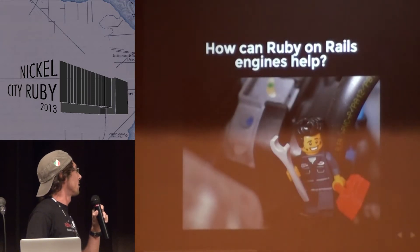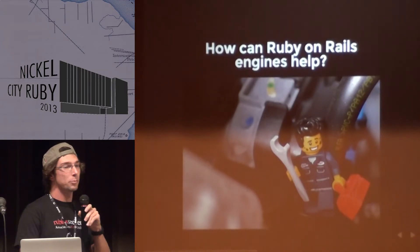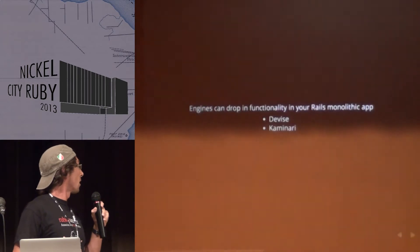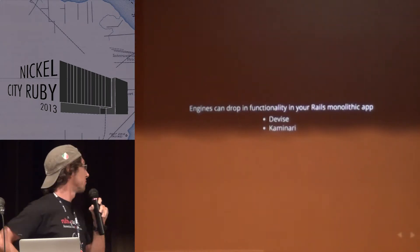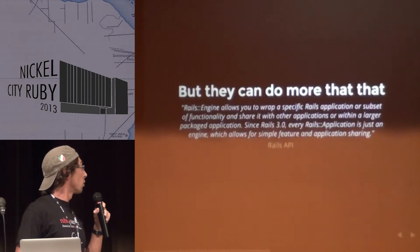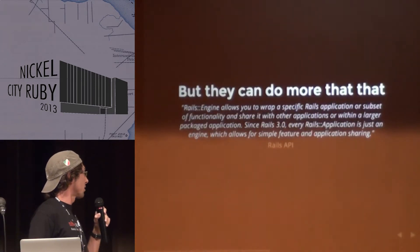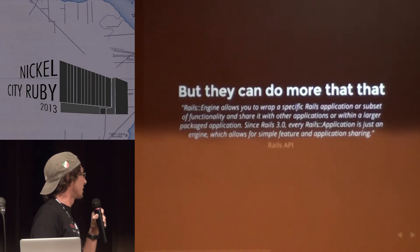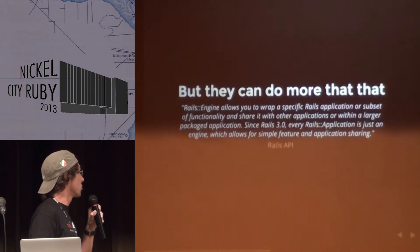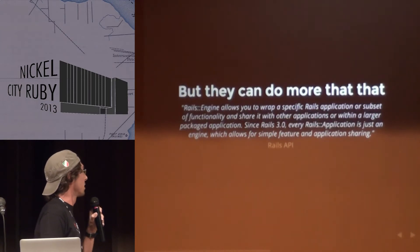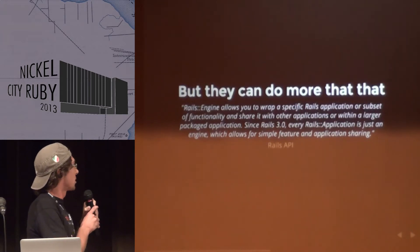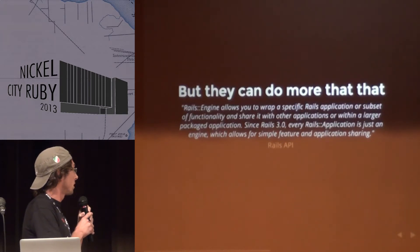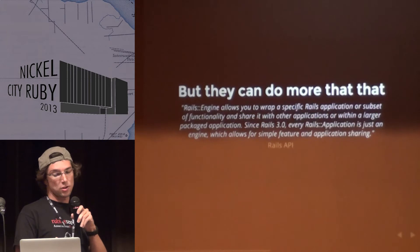So how can Ruby on Rails engines help? Well, engines are often used as drop-in functionalities, and most of us probably use them — like Devise — but they can do more than that. From the Rails API: a Rails engine allows you to wrap a specific Rails application, or a subset of functionality, and share it with other applications or within a larger packaged application.